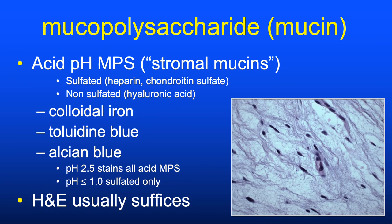We discussed the PAS stain for epithelial glandular mucins. Stromal mucins or acidic pH mucins are highlighted by different stains: colloidal iron, toluidine blue, and alcian blue. However, this is another stain I probably order only once a year—H&E usually suffices at the level of diagnostic dermatopathology.